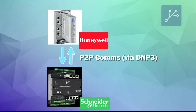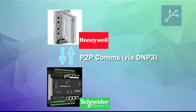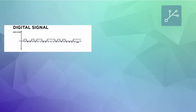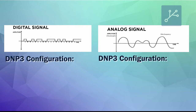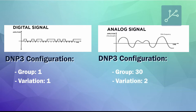We have begun with the tasks to configure and test the peer-to-peer configuration from Honeywell RTU to Schneider RTU. We configured the Honeywell RTU to be DNP3 slave and the Schneider RTU to be the DNP3 master. Our objective is to send information between the two RTUs and be able to read information of each other as well for digital objects and analog objects. We configured the digital objects to be DNP3 group 1, variation 1, and analog objects to be group 30, variation 2, representing digital objects in 8 bits and analog objects in 16 bits respectively.